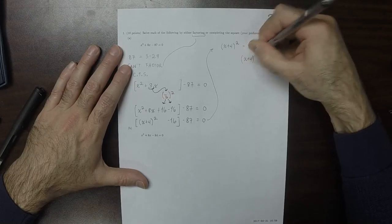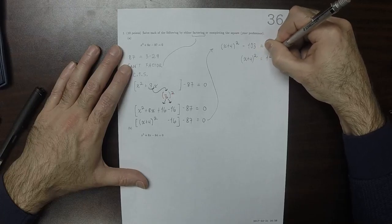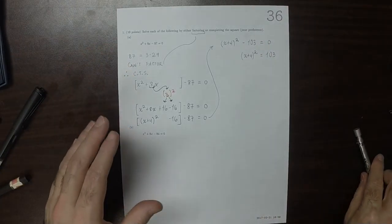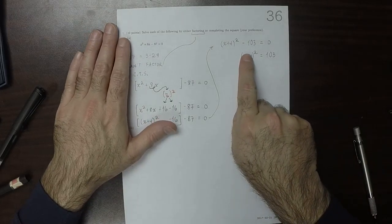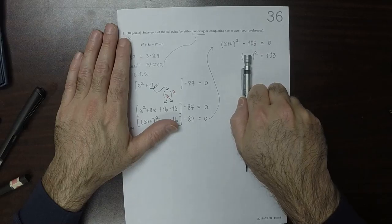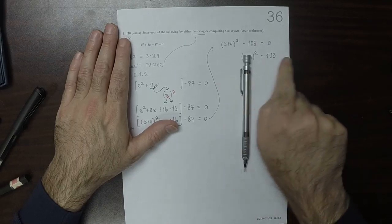So, x plus 4 squared, is 103. So what's happening here, is that whatever is in the square, it has to square to become 103.